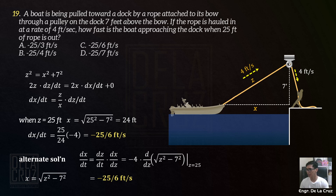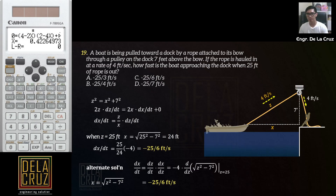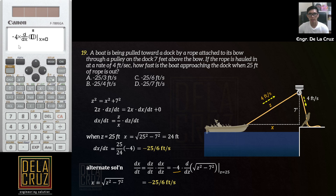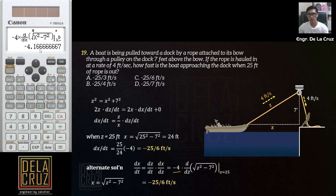Let me have that one in our calculator. So input natin: negative 4 times d over dX — by default yung variable is X sa calculator natin — of square root of X squared minus 7 squared, when X is 25. You'll have negative 4.167, which is equivalent to negative 25 over 6.